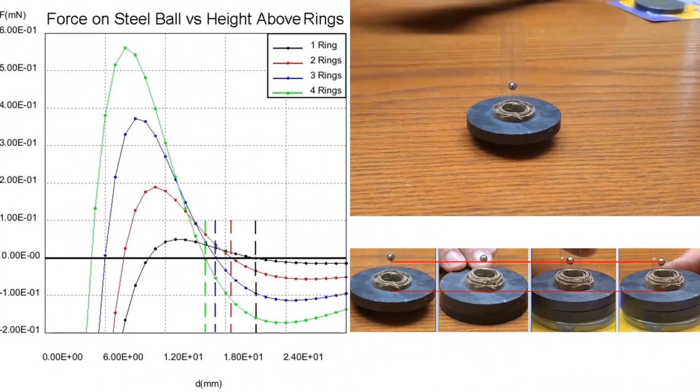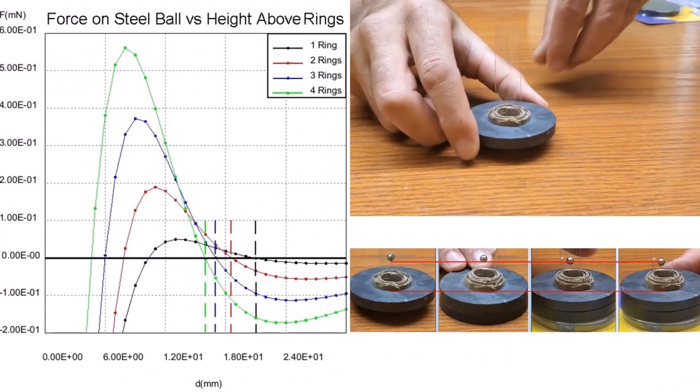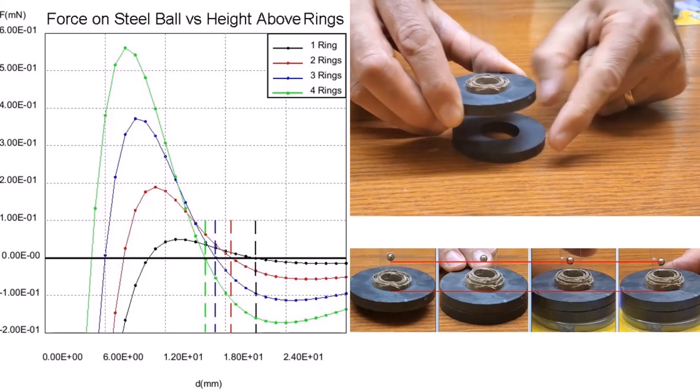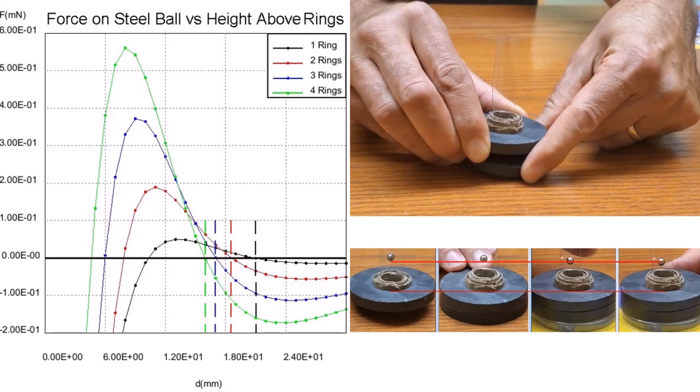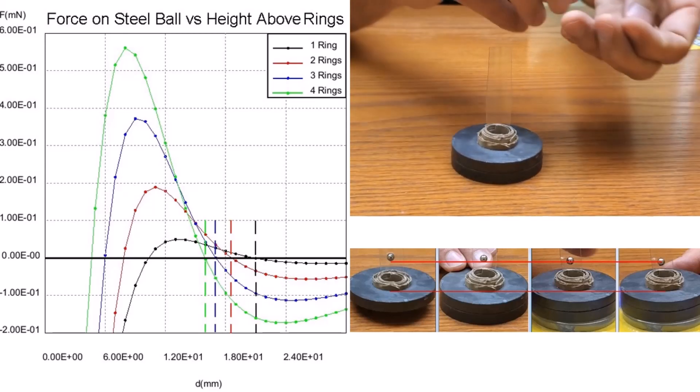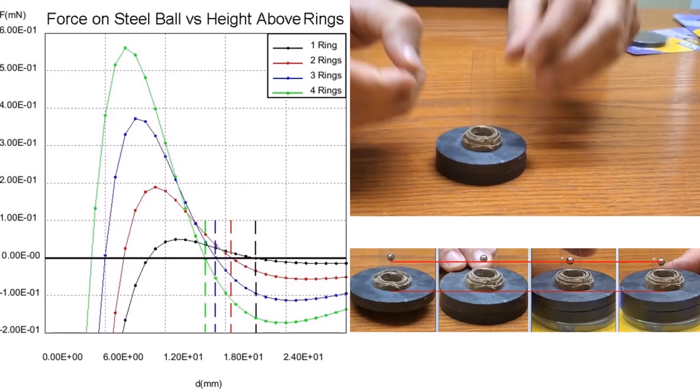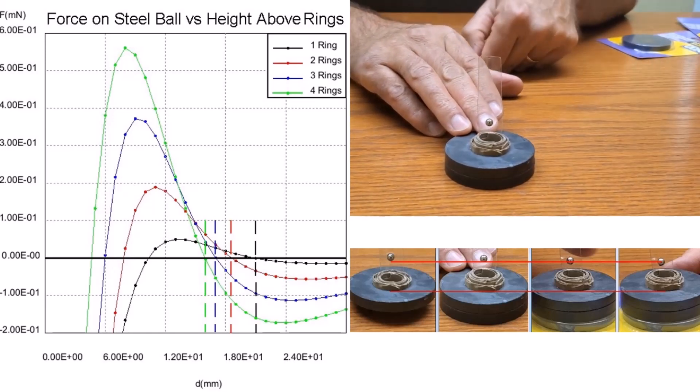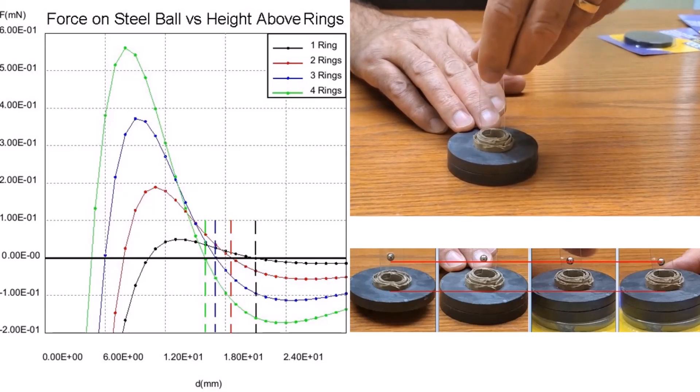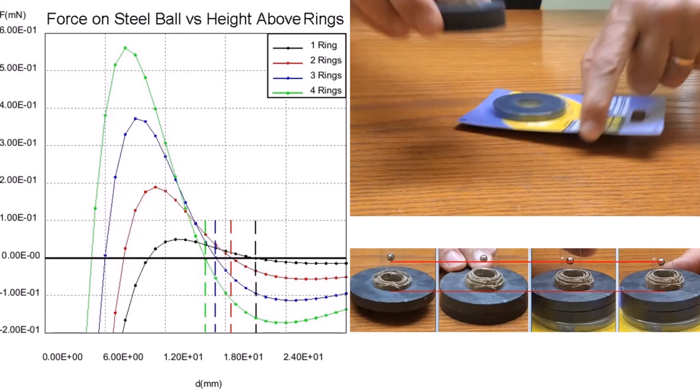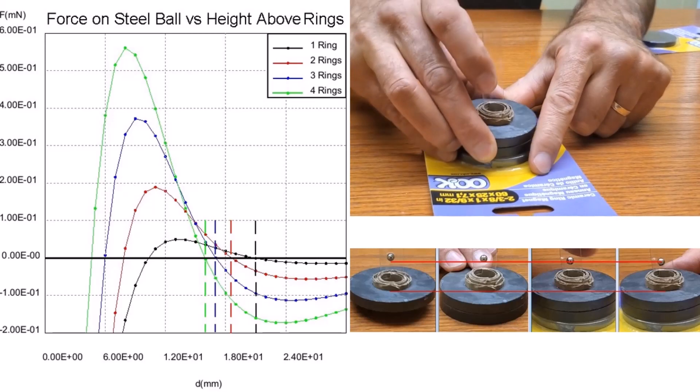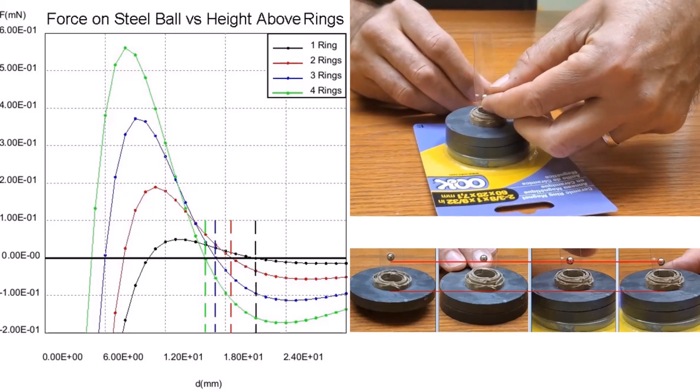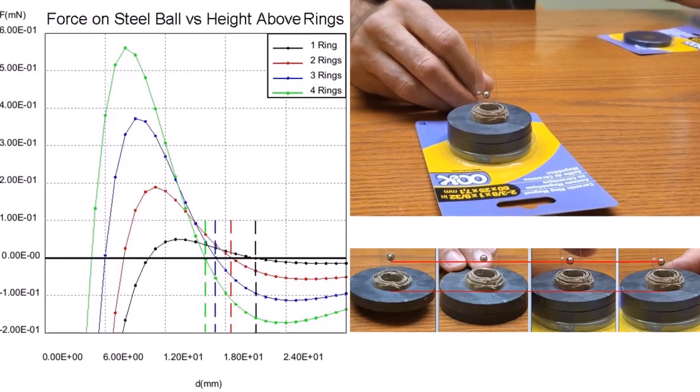It would be natural to expect that more rings and/or stronger magnets would result in a stronger force, thus a higher levitation. In the video, I'm using a ball magnet rather than steel because I couldn't support a ball of steel with only one ring. So this is a little bit true. But mostly, it is best to think of this as a confinement zone controlled by the geometry of the magnets. The stronger the field, the higher the forces, thus the stronger the confinement, but the location is not much affected.